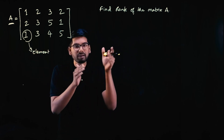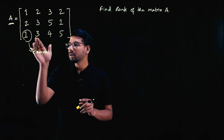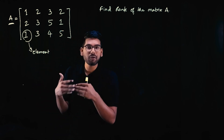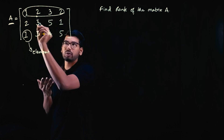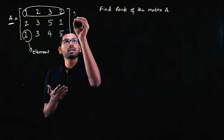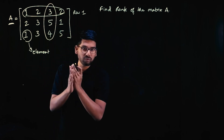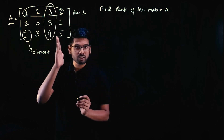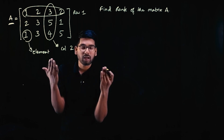These English words are very important. An element is a number in the matrix. The numbers 1, 2, 3, 2 which are arranged horizontally are called rows — row one.